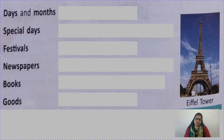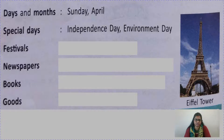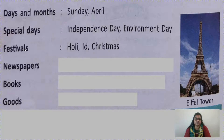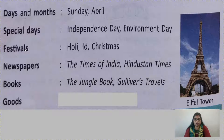Days and months — there are 7 days and 12 months; for example, Sunday and April. Special days: Republic Day, Independence Day, Environment Day, Teachers Day, Children's Day. Festivals: Holi, Diwali, Eid, Christmas. Newspapers: The Times of India, Hindustan Times, Prabhat Khabar, Dainik Bhaskar. Books: The Jungle Book, Gulliver's Travels, and your English reader — that also you can write.